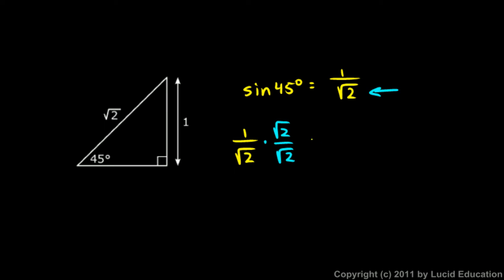And up top, that gives me the square root of 2. And on the bottom, square root of 2 times square root of 2 is just 2. So this is equal to the square root of 2 over 2. The sine of a 45-degree angle is the square root of 2 over 2, and that's approximately 0.707. Those digits really go on forever, but rounded to three places, that's 0.707.